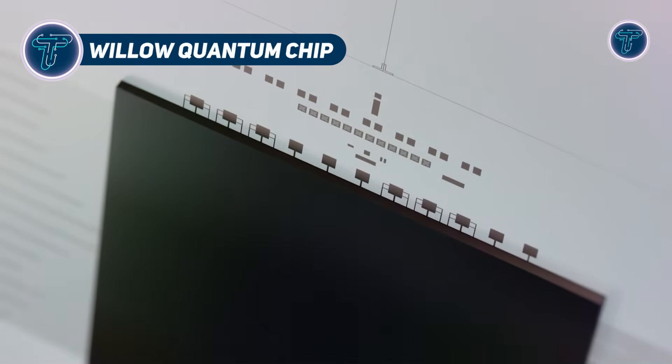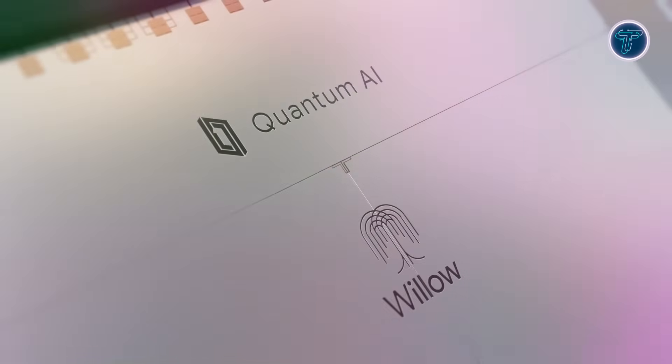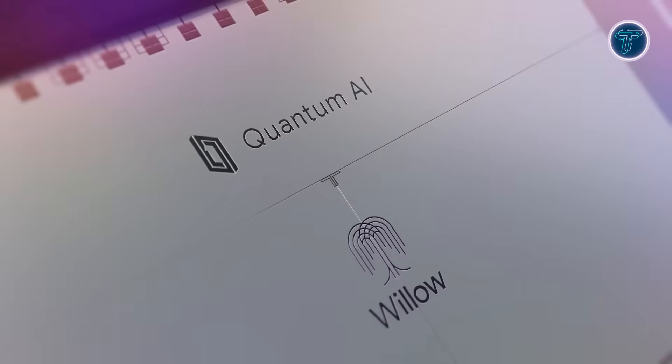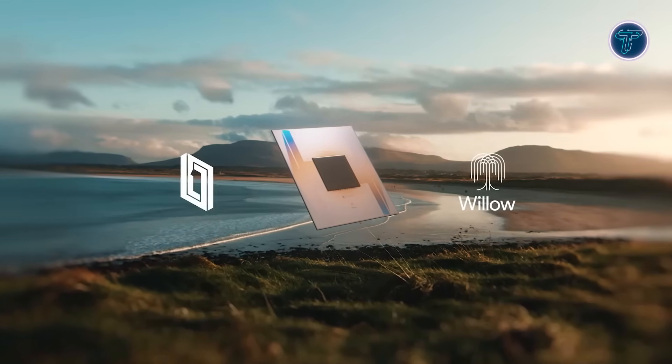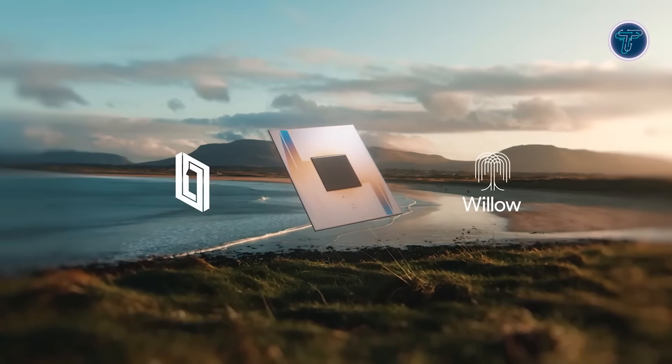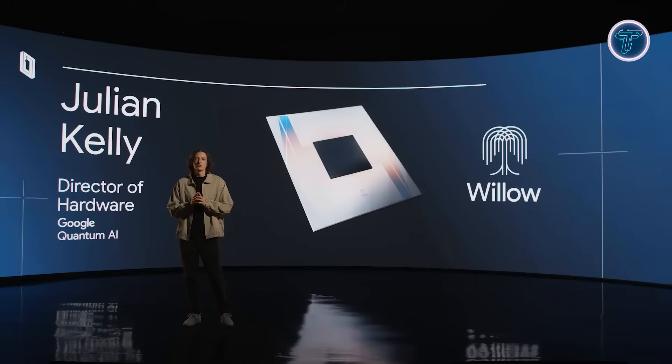Willow Quantum Chip. Google's Willow Quantum Chip marks a revolutionary step in building scalable, error-corrected quantum computers. Featuring 105 superconducting transmon qubits arranged in a lattice, Willow introduces real-time error correction by grouping physical qubits into logical qubits, reducing error rates as qubit numbers grow. This architecture pushes the system into the below-threshold zone, crucial for reliable quantum operations.